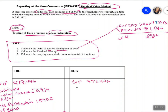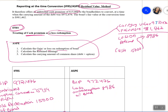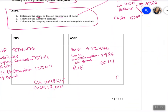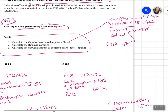Under ASPE using the residual value method: record Bond Payable $972,476 and Loss on Redemption of Bond $8,986. Out of the $15,000 cash premium, $8,986 goes to the loss on redemption and the remaining $6,014 goes to Retained Earnings. Common Shares is credited for $1,048,415 and Cash is credited for $15,000. This is how the transaction is recorded under the residual value method.